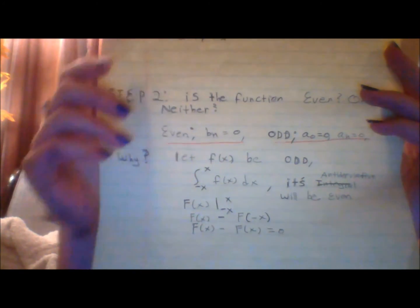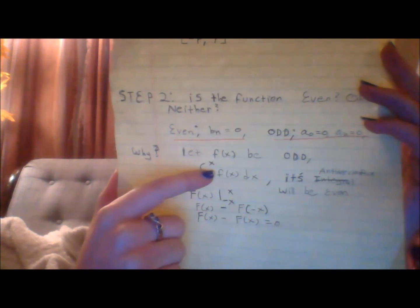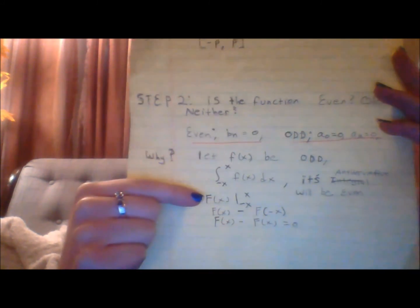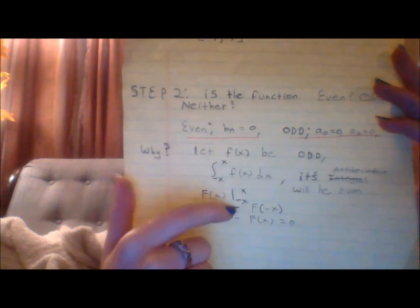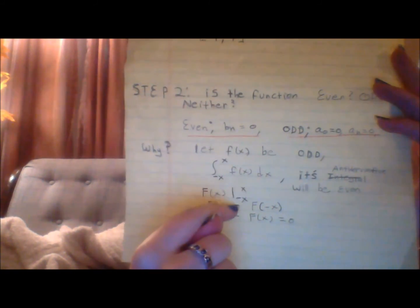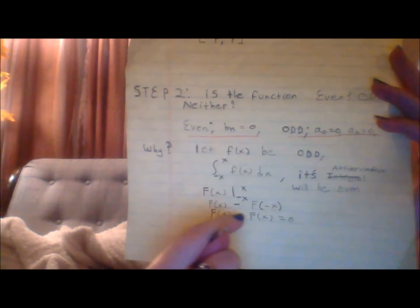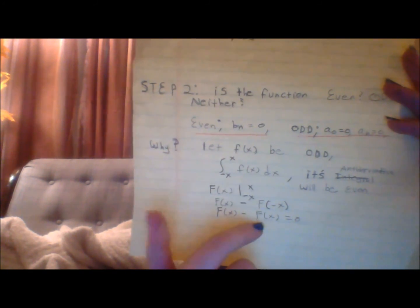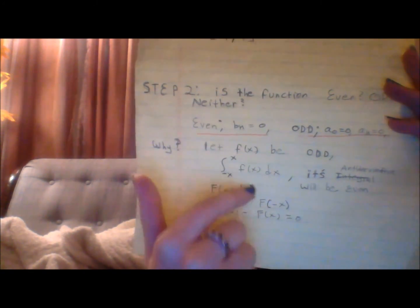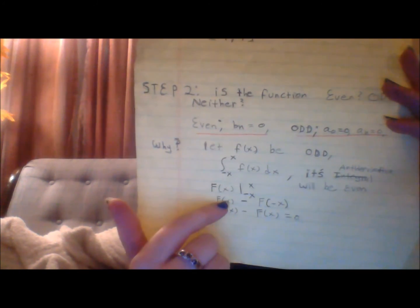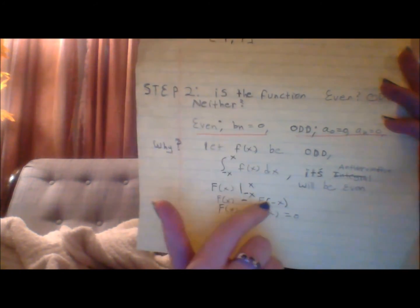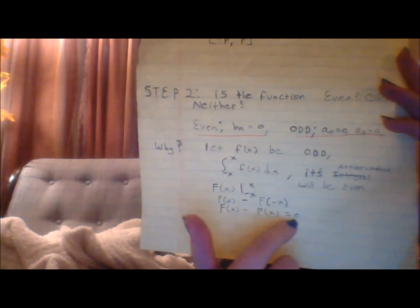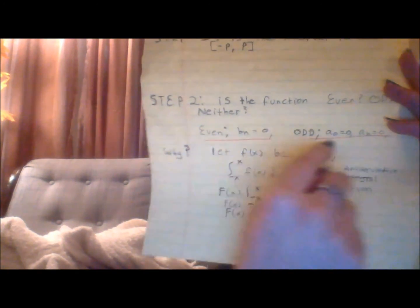It really takes a lot of the work out of it if you have these memorized. The reason it is that way is because if you ever have an odd function and you integrate it, you'll end up with an even function. And if you ever have an even function, and you're plugging in values that are the same value except one's negative, you know that a negative input into an even function will give you a positive output. If you're using the same input and one is negative, you're going to end up with f(x) minus f(-x), but you know f(-x) is just f(x) for an even function, so you end up with just 0.